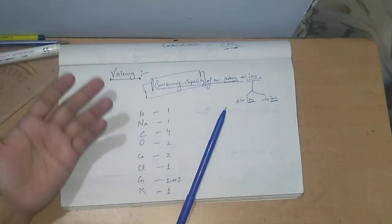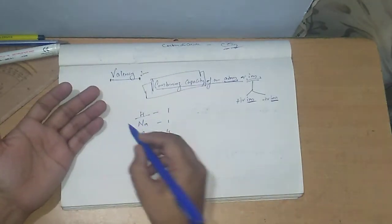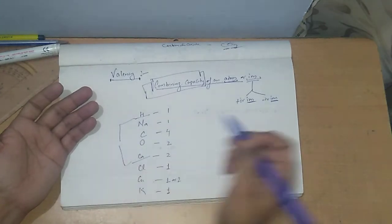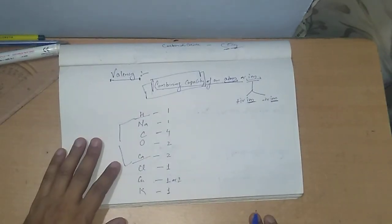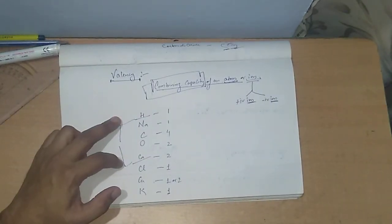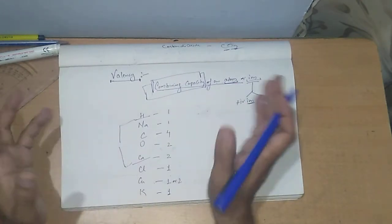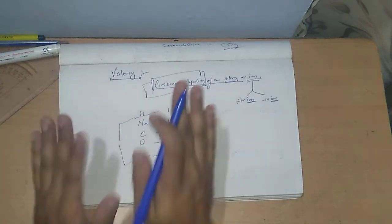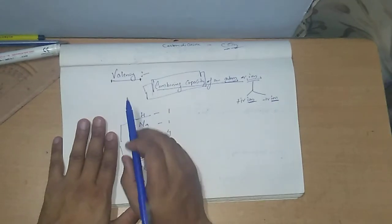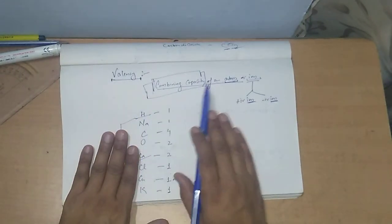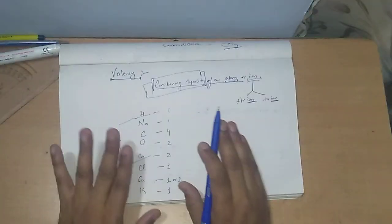We had knowledge of individual elements, and by studying their combining capacity — valency — we tried combining them. When we found that they both satisfied each other's needs and had good combining capacity, we combined them and got a new product. So one more time: valency is the combining capacity of an atom or an ion of an element or group of elements.